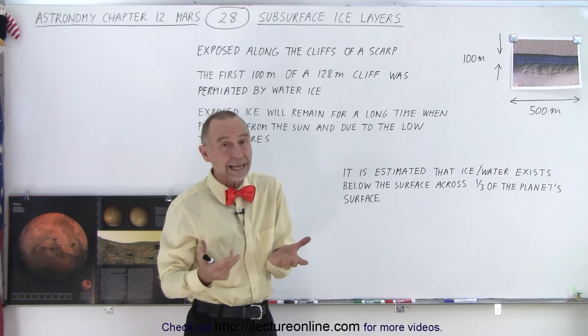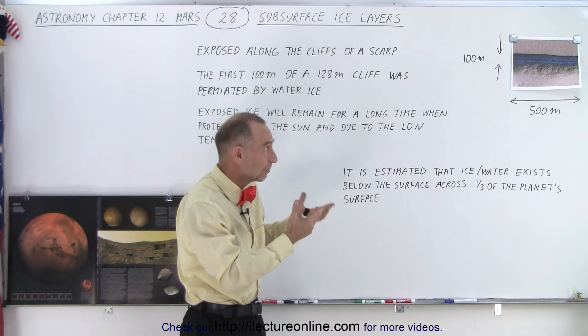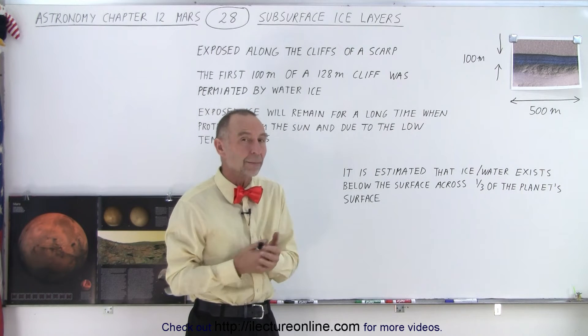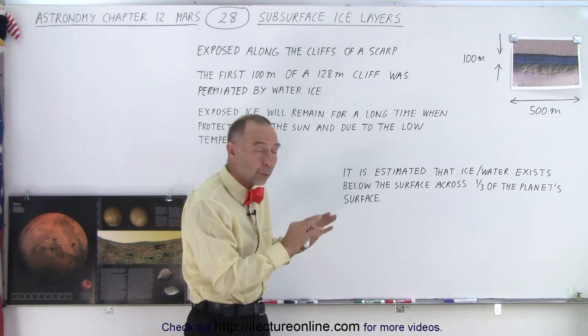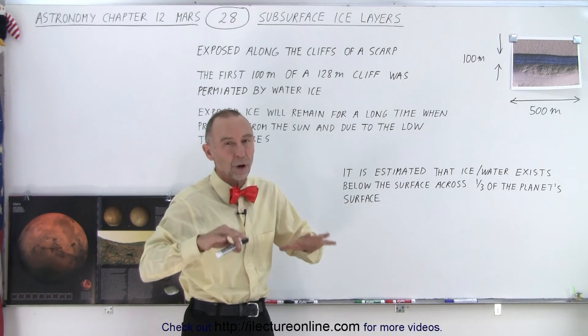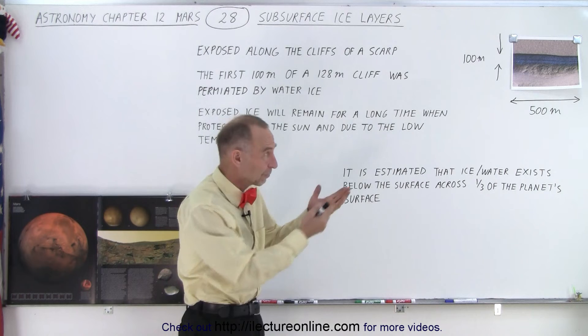Now that again indicates that this kind of existence of water is probably widespread around the planet, and they estimate that about one-third of the planet's surface probably has subsurface ice or water of some sort.